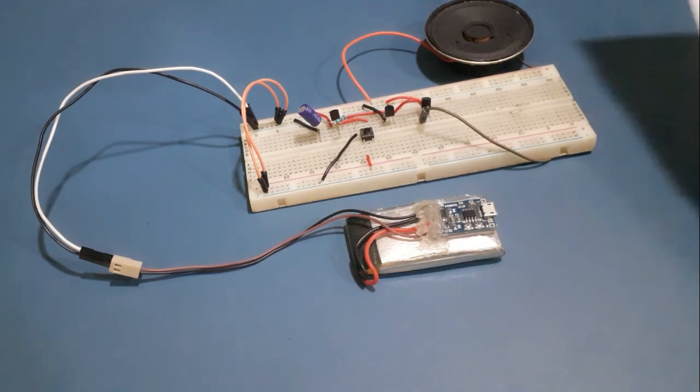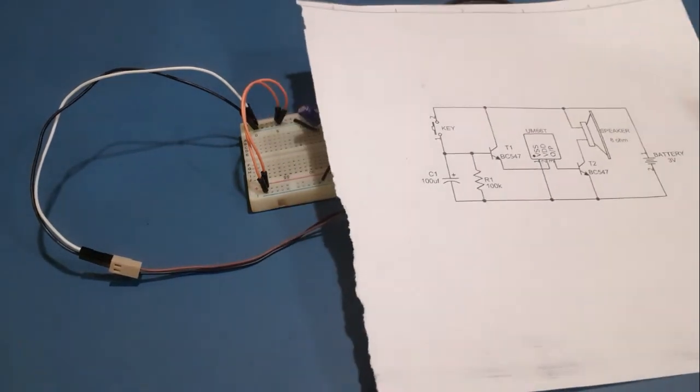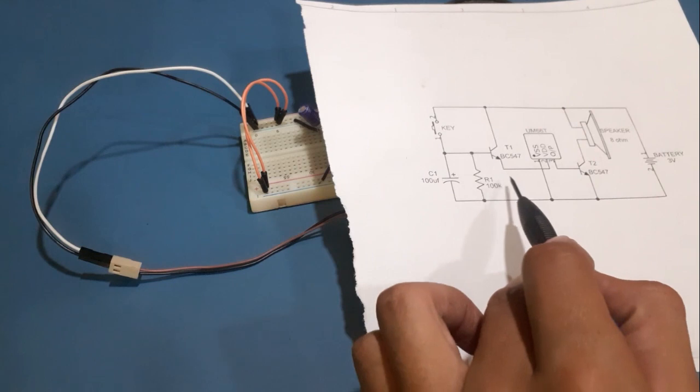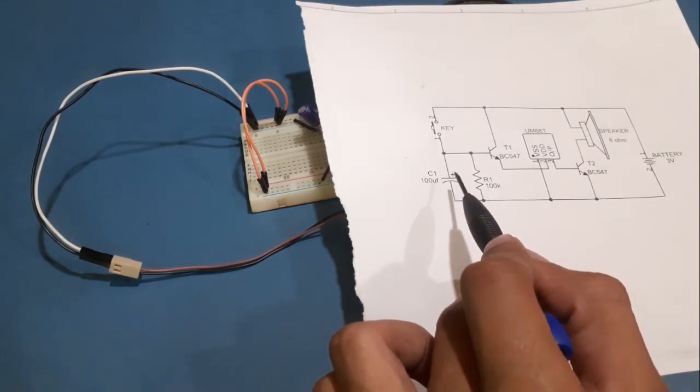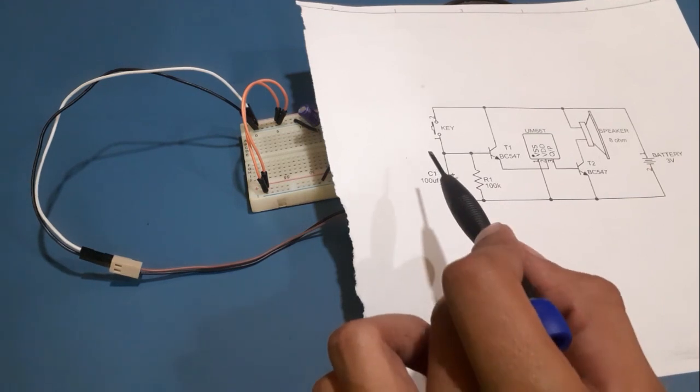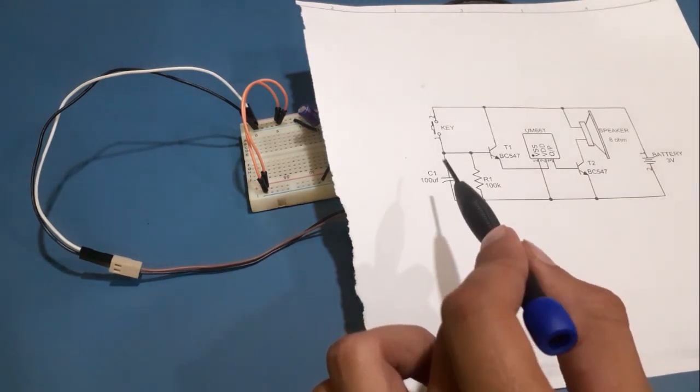The circuit diagram for this project is here and the transistor T1, resistor R1 and capacitor C1 are used to form a time delay circuit to set the duration for which the bell sounds.